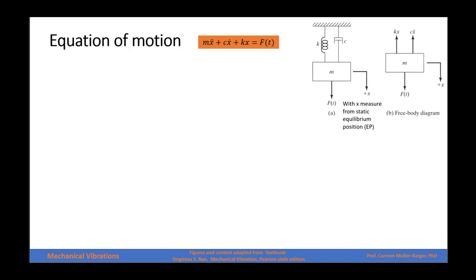The equation of motion of a system that has an external force is very similar to the previous one we analyzed. However, we now have a term on the right side of the equation. Before, we had zero there, so the equation of motion was homogeneous. Right now, the equation of motion has the mass times acceleration, the force of the damper, the force of the spring, equal to the external force applied. Remember that x is measured from the static equilibrium position, which is important because otherwise we would have the weight as an external force as well.